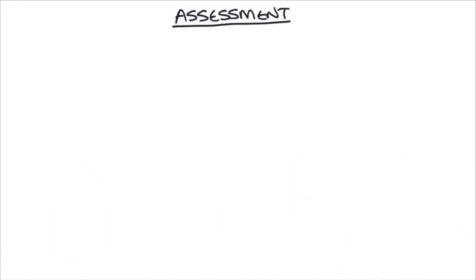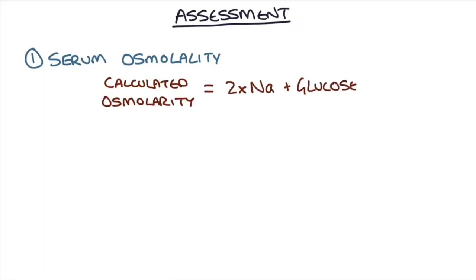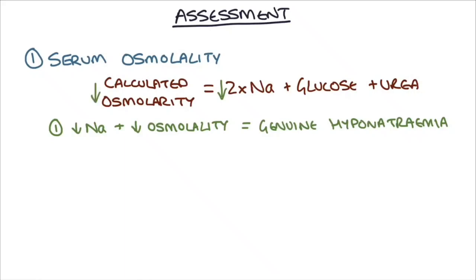So how do you assess a patient with a low sodium to try and figure out what the cause is? The first thing you want to do is establish, is that patient having a genuine hyponatremia? You can do that by checking the serum osmolality. Remember this equation: calculated osmolarity equals two times sodium plus glucose plus urea. If the patient has a low sodium and their serum osmolality is low, you know this is a genuine hyponatremia. The low sodium is causing a low osmolality.